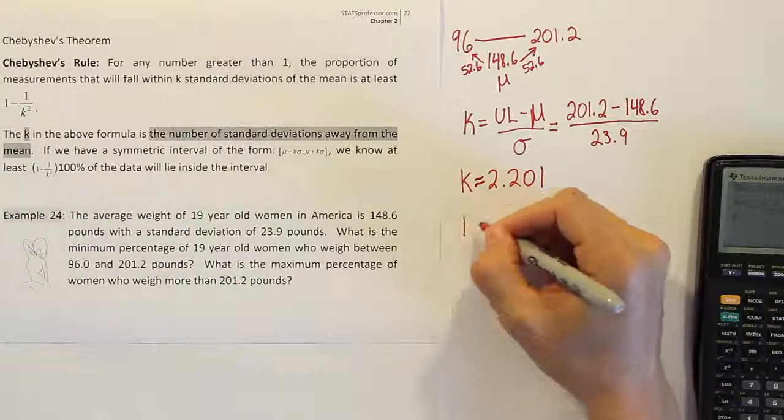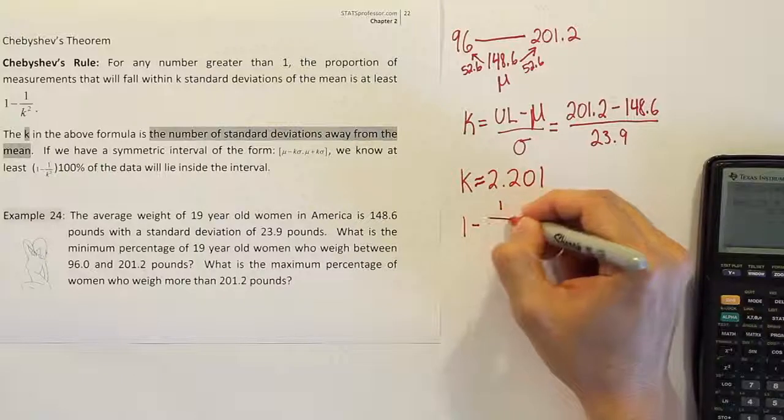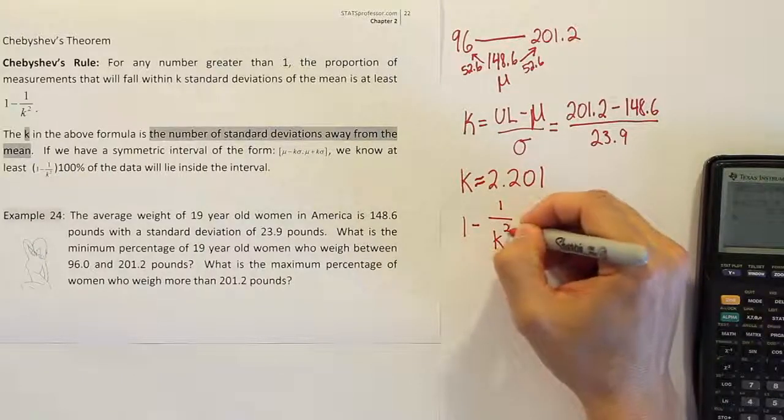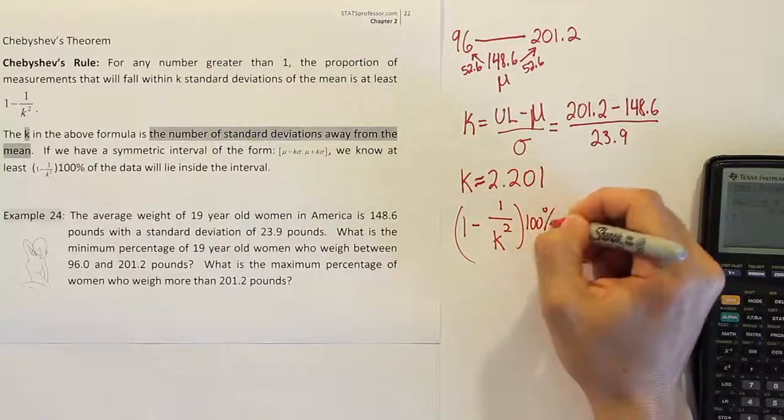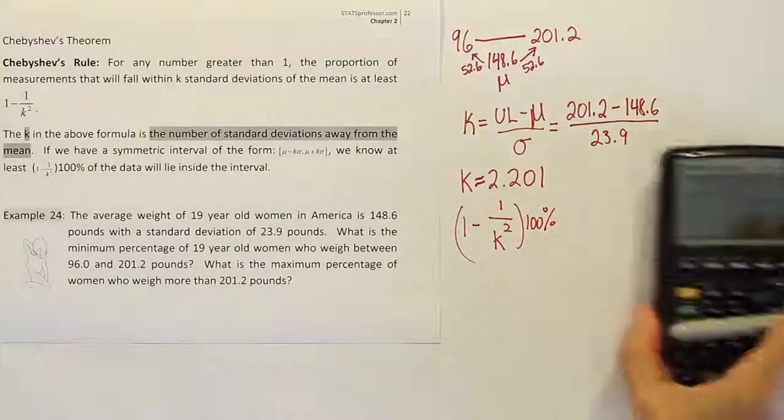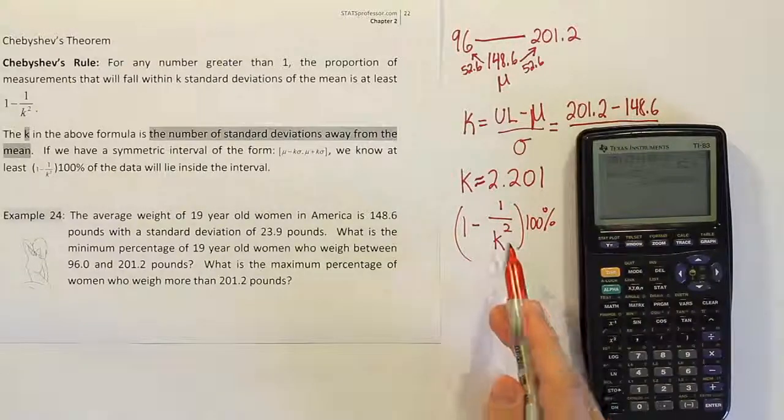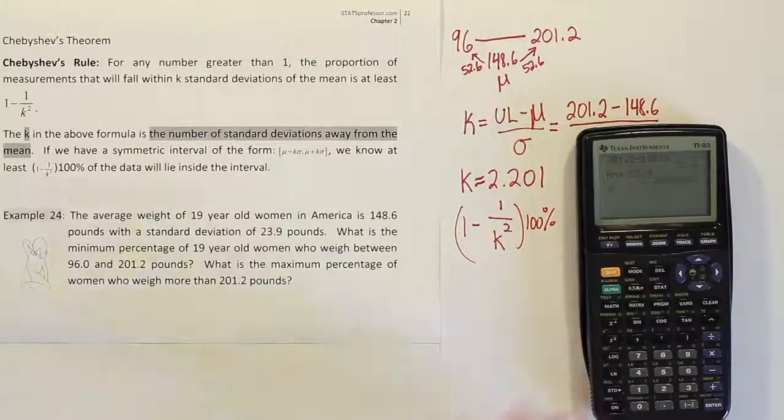So let's do that then. We're going to take that formula 1 minus 1 over k squared. And then we're going to multiply it afterwards by 100% just to convert it into a percentage. So that's pretty straightforward. All these are just numbers except for our k which we already have. We're going to plug it in there and see what we get.